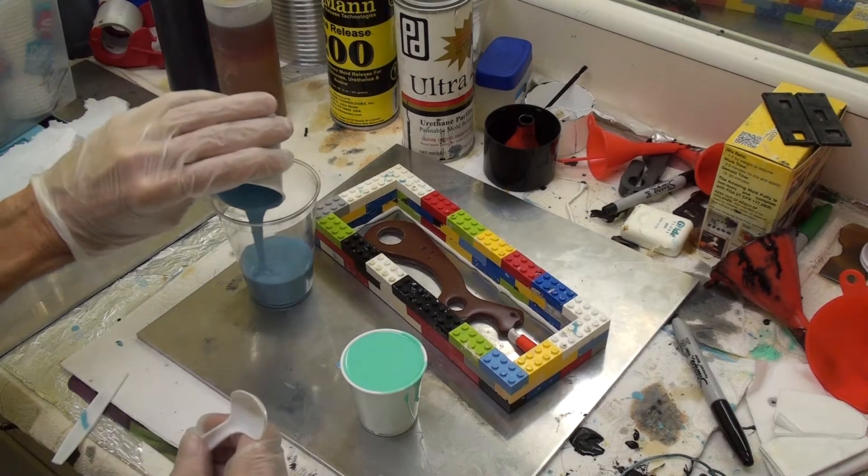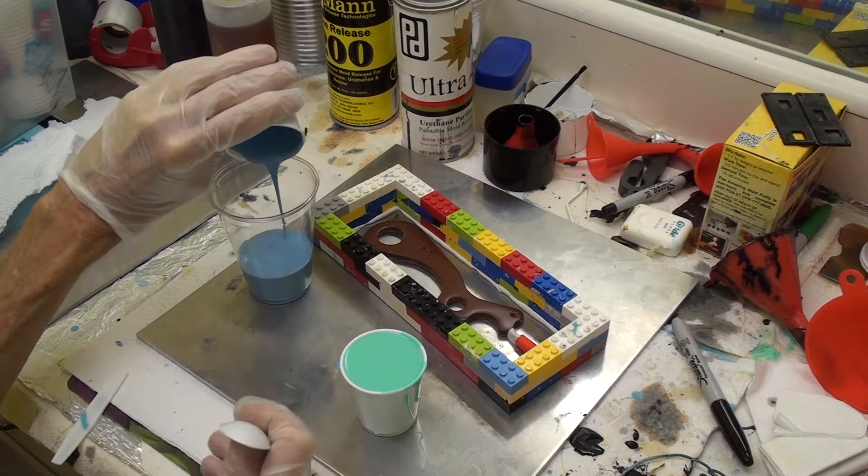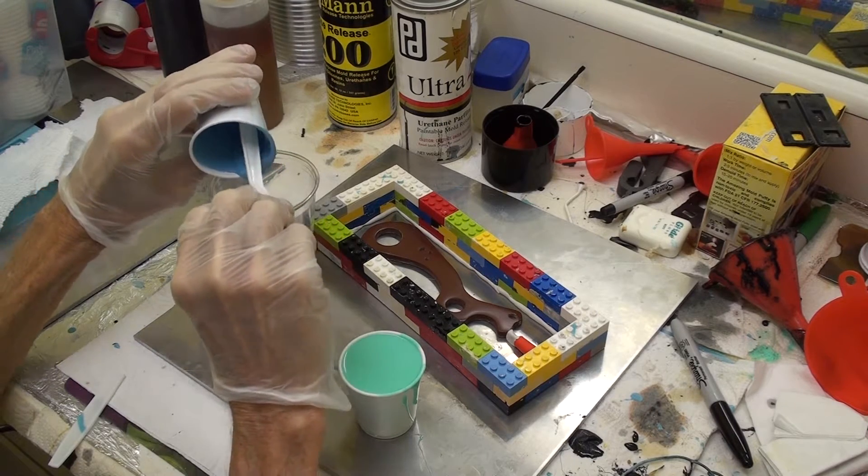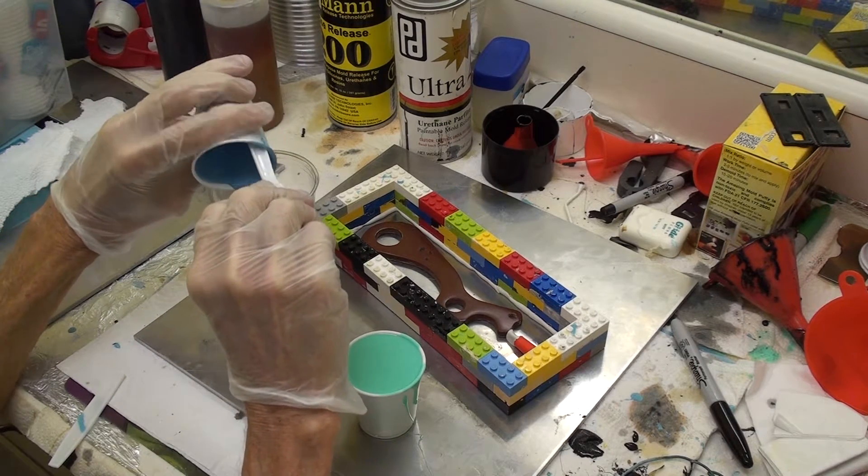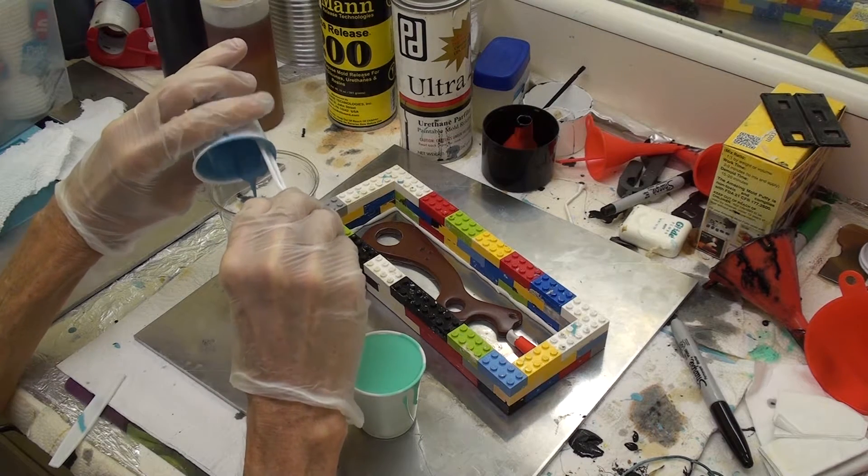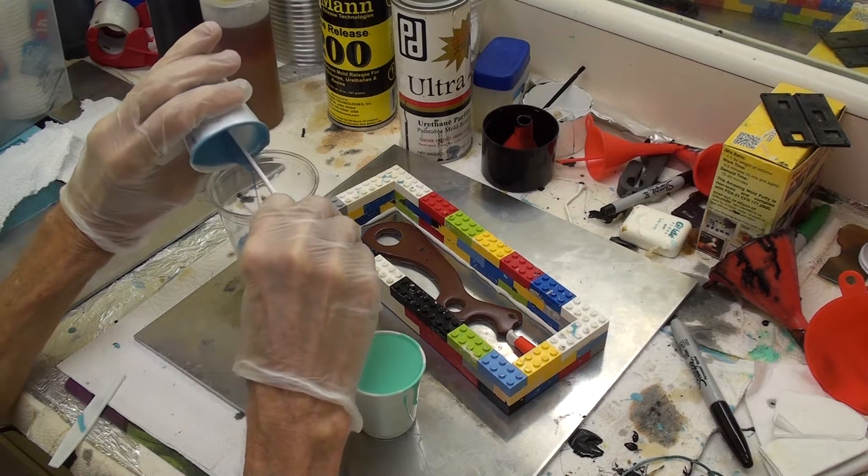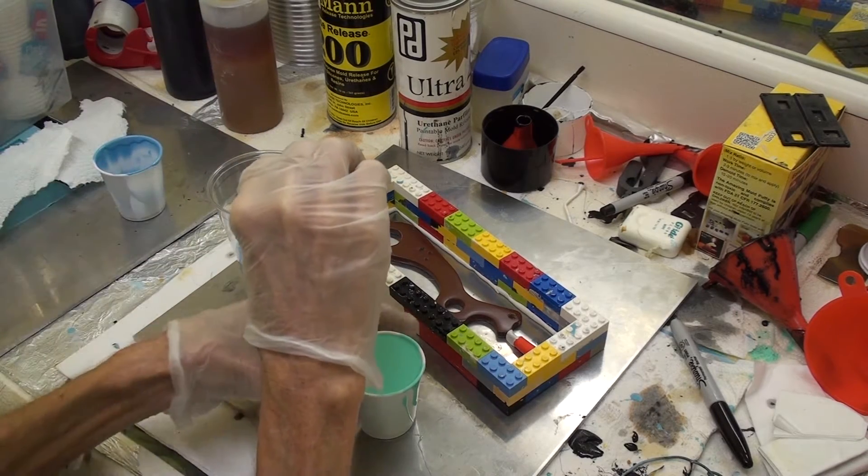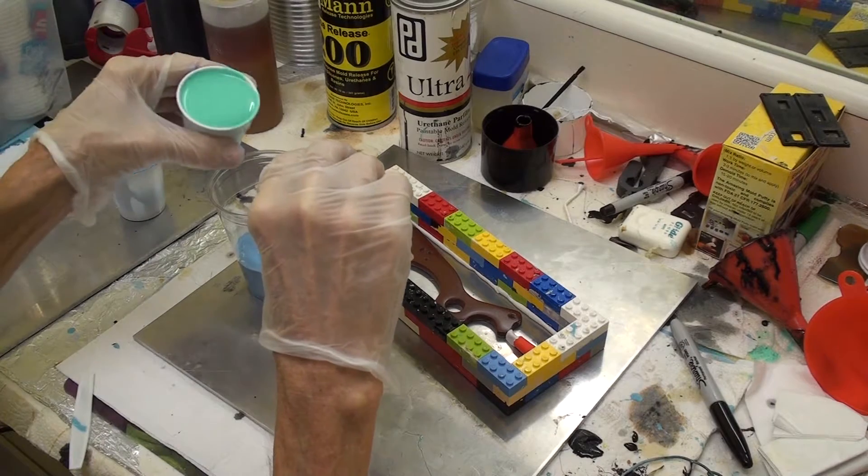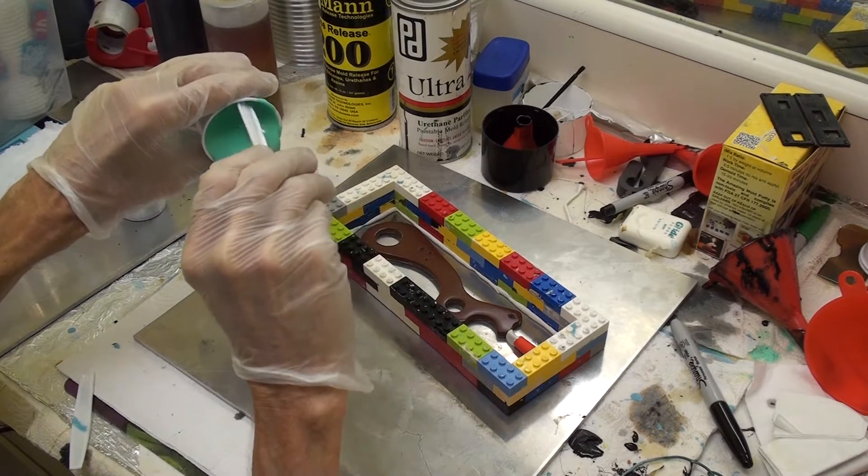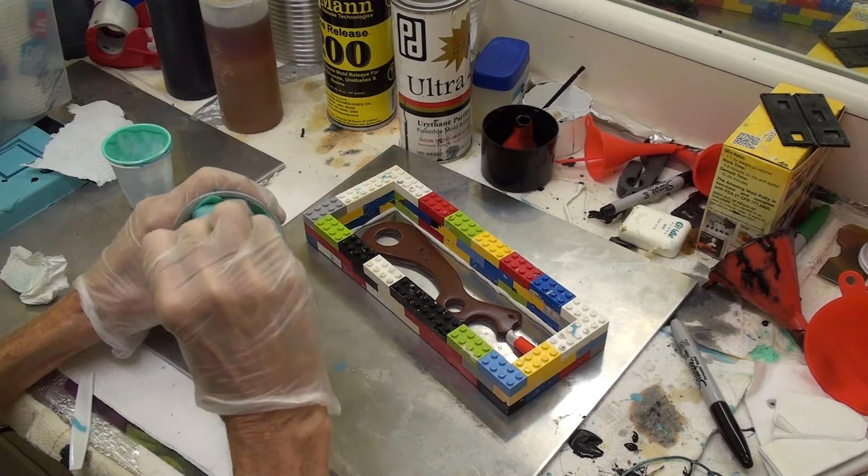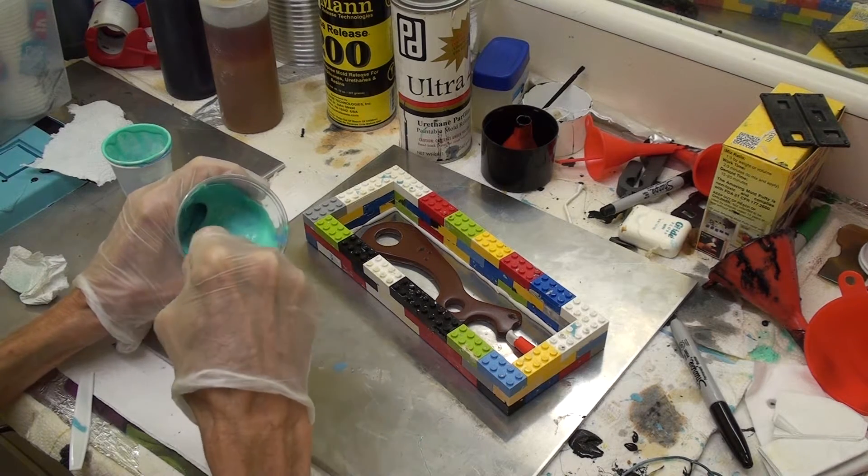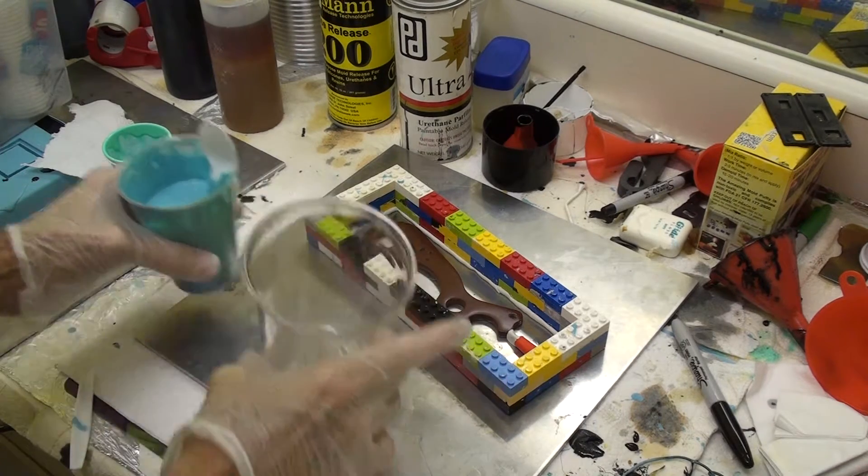Once the rubber is measured, I pour it into a slightly larger cup to begin mixing. This is the first of two cups that I'll mix the rubber in. I spend a little bit of time scraping the measuring cups because the rubber is kind of expensive and I don't want to waste any.